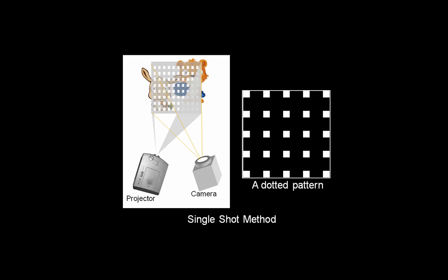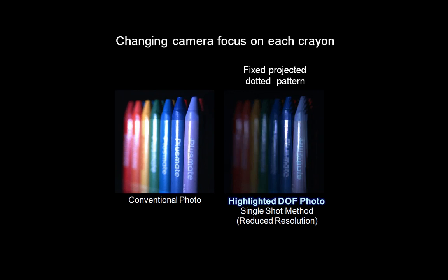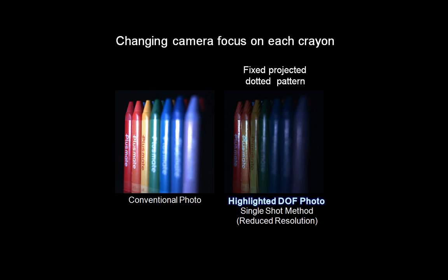In the first method, called single shot, we capture a single photo by projecting a checkered pattern and sampling local maxima points. The resolution of the highlighted depth of field photo is the same as the number of white dots in the pattern, which is smaller than the original captured image. This compares conventional photos and highlighted depth of field photos by the single shot method.